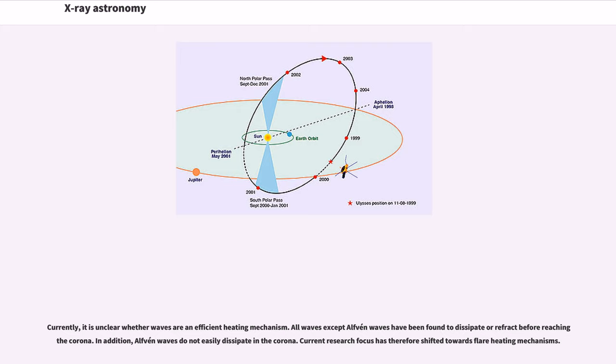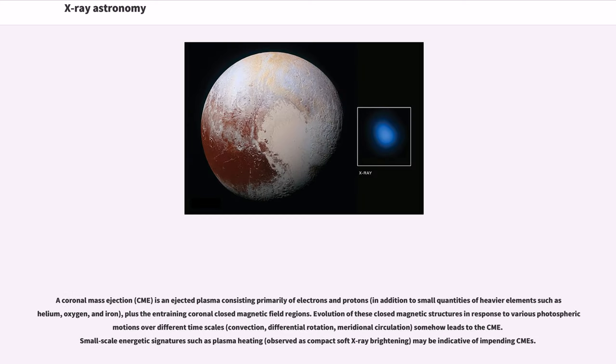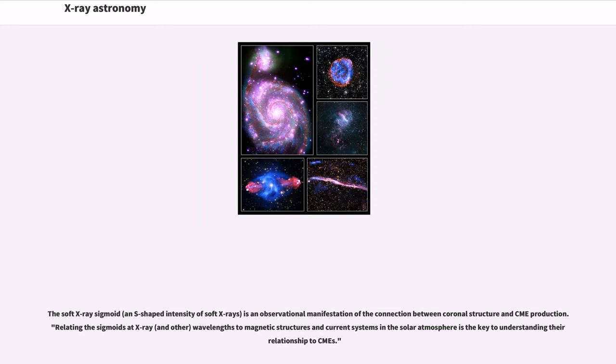A coronal mass ejection is an ejected plasma consisting primarily of electrons and protons, plus the entraining coronal closed magnetic field regions. Evolution of these closed magnetic structures in response to various photospheric motions somehow leads to the CME. Small-scale energetic signatures such as plasma heating may be indicative of impending CMEs. The soft X-ray sigmoid is an observational manifestation of the connection between coronal structure and CME production. Relating the sigmoids at X-ray wavelengths to magnetic structures is the key to understanding the relationship to CMEs.